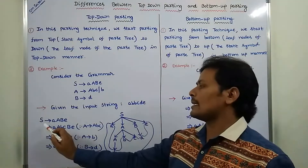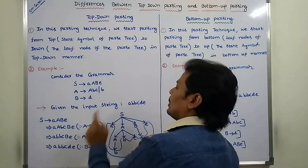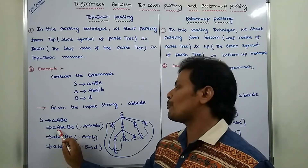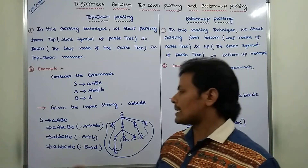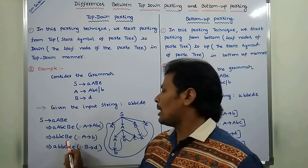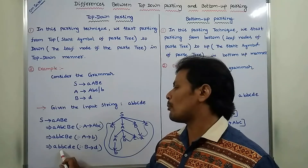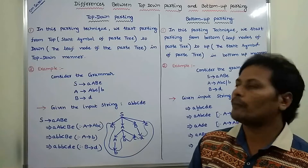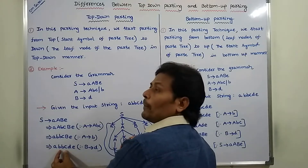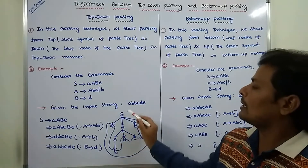S = a A B e. Here, capital A = A b c, so we replace capital A by A b c. Next, capital A can be replaced by b. So we get a, b, b, c, d, e. We are starting from the start symbol of the parse tree and getting the leaf nodes by using the top-down manner for this grammar. This is top-down parsing.